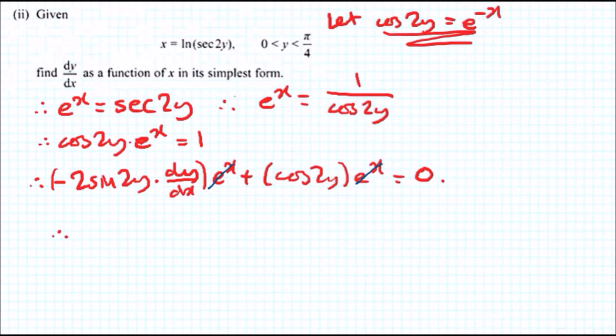So rewriting everything, you should get something like this. dy/dx equals cos 2y all over 2 sine 2y. Put a bracket around it.